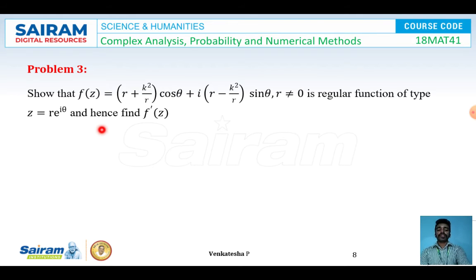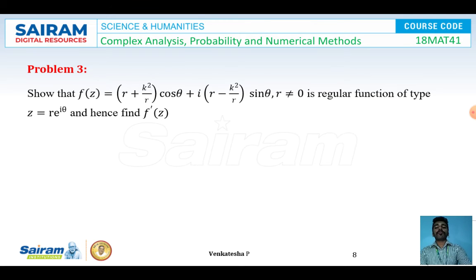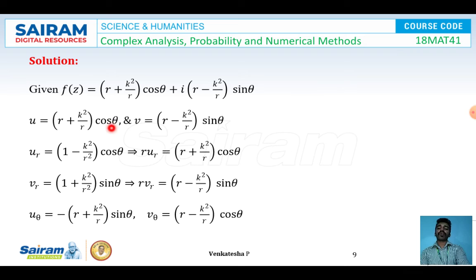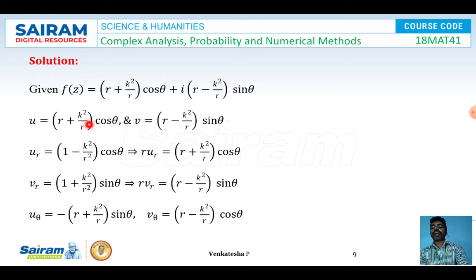Problem three: show that f(z) = (r + k²/r)cos θ + i(r - k²/r)sin θ, for r ≠ 0, is a regular function of type z = r·e^(iθ), and find f'(z). We identify u = (r + k²/r)cos θ and v = (r - k²/r)sin θ. Differentiating with respect to r: u_r = (1 - k²/r²)cos θ and v_r = (1 + k²/r²)sin θ.